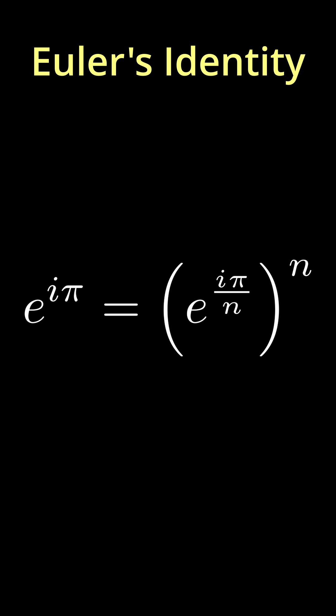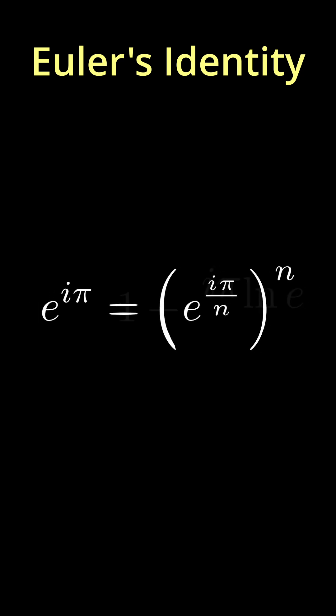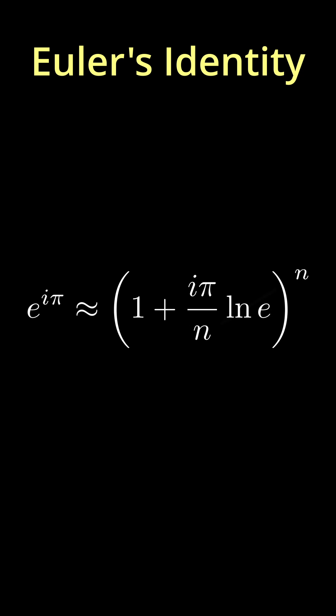For large n, e to the i pi over n is approximated by one plus i pi over n multiplied by the natural log of e. Its natural log is one, so that term vanishes.